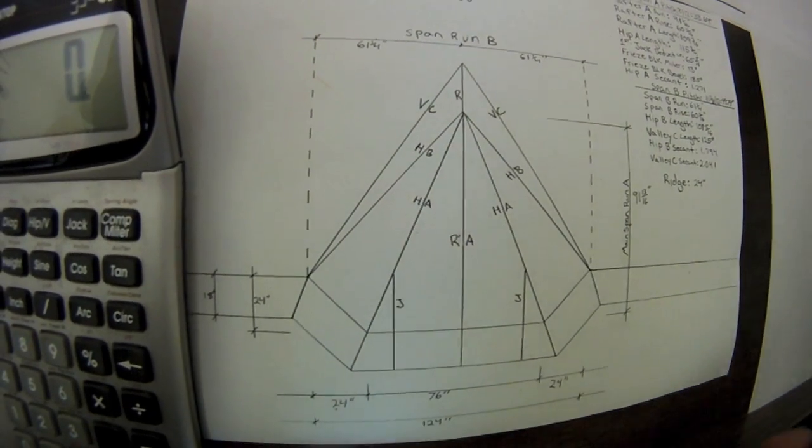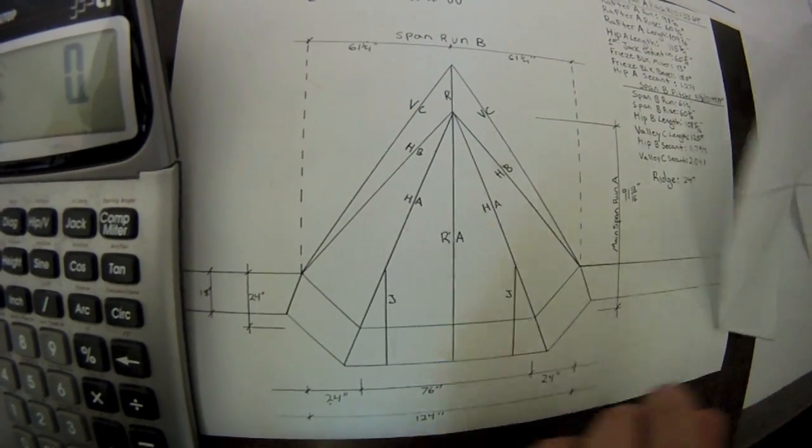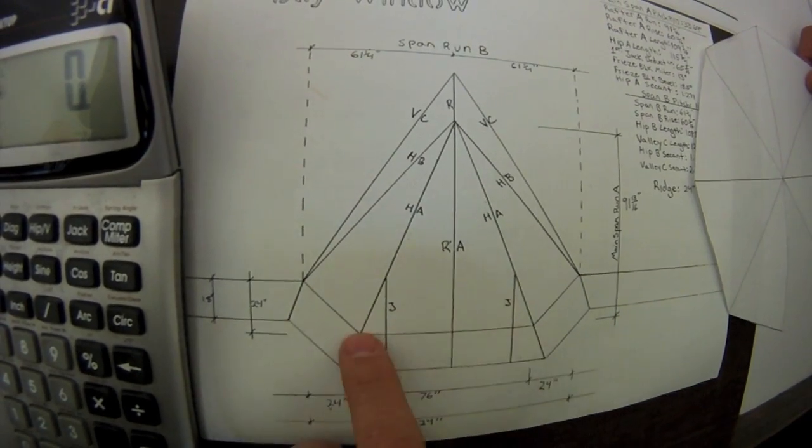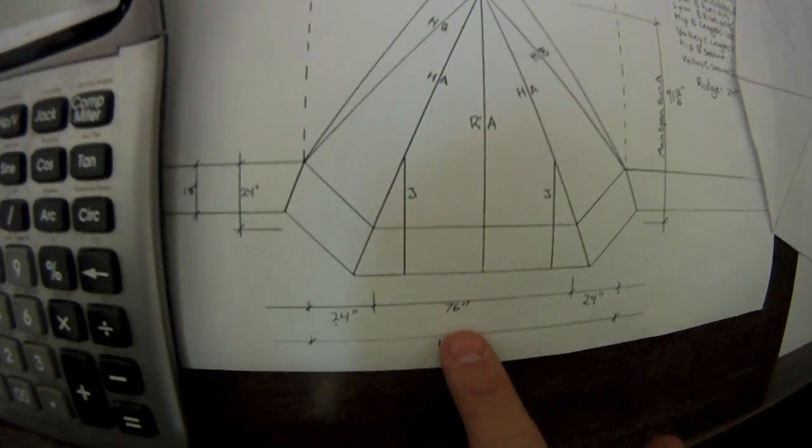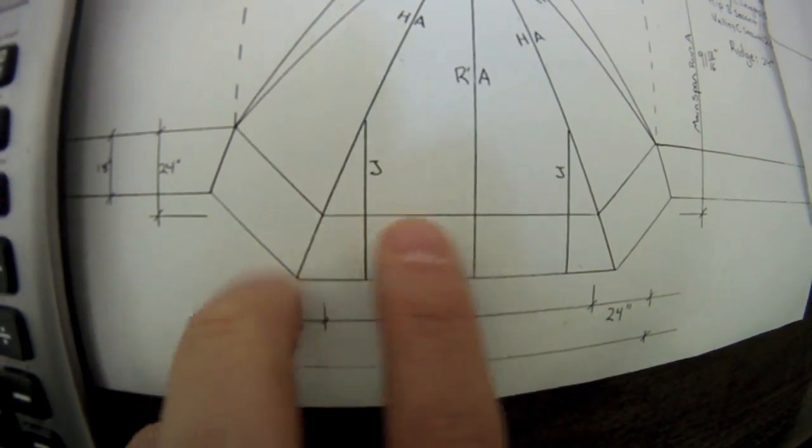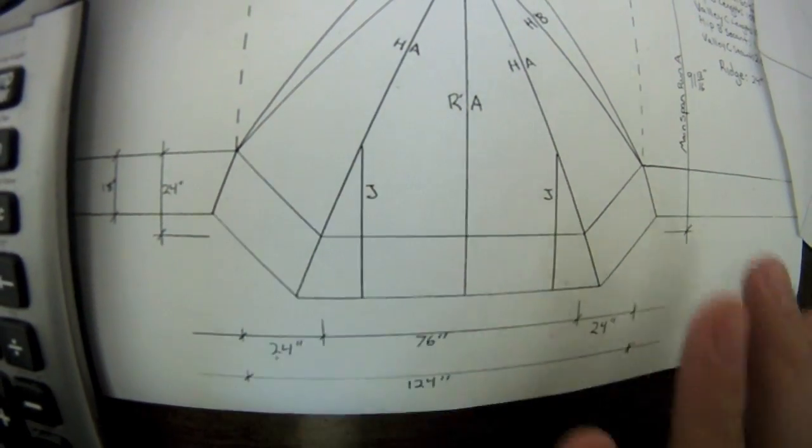So an easy way to explain this would be the length of side for this length of wall right here. As you notice, it is 76 inches and that goes from here to this point here, and this is what helps you dictate everything.